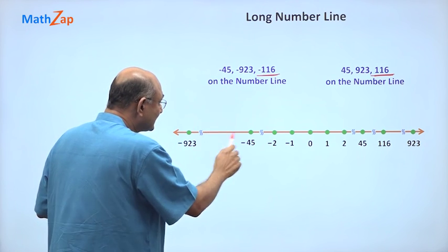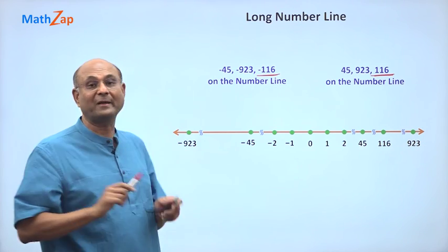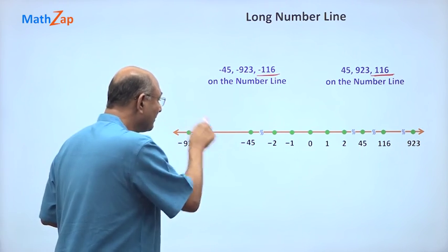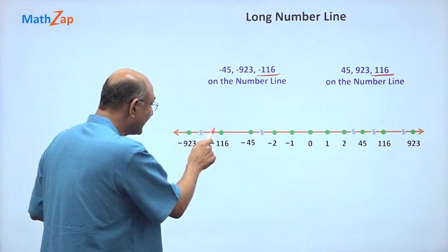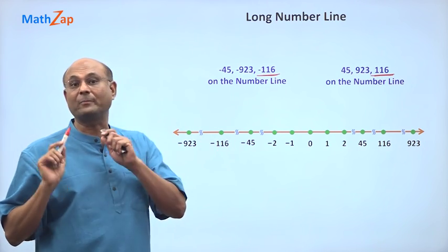So minus 116 has to be in between minus 45 and minus 923. So I will put it in here. This side already has a break. That side also needs a break. So I put a break.